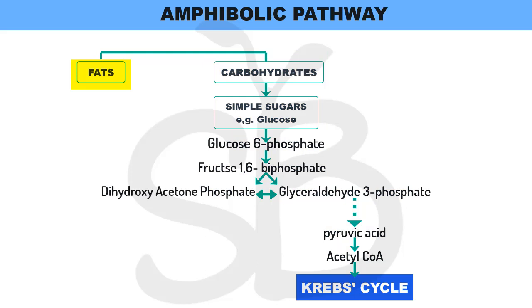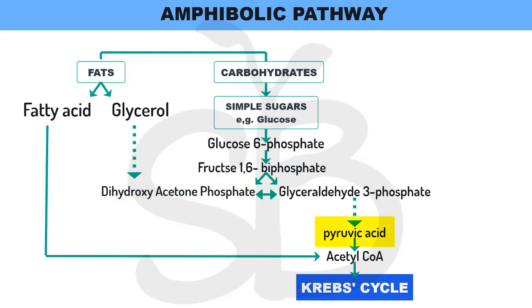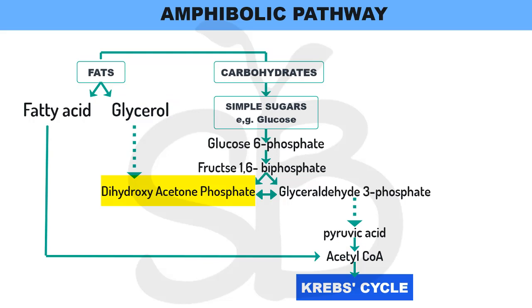Fats are taken directly into the respiratory pathway. The fat is split into fatty acids and glycerol. The fatty acids are converted to Acetyl Coenzyme A, which enters the Krebs cycle for energy production. The glycerol is converted to Dihydroxyacetone Phosphate (DHAP), then to Phosphoglyceraldehyde, then to pyruvic acid, which undergoes oxidative decarboxylation, and enters the Krebs cycle.